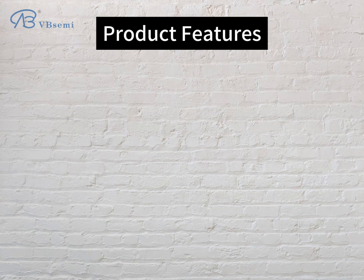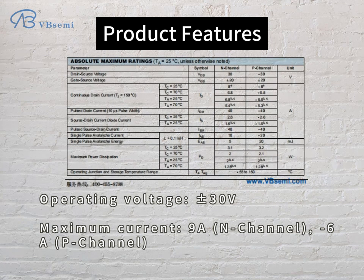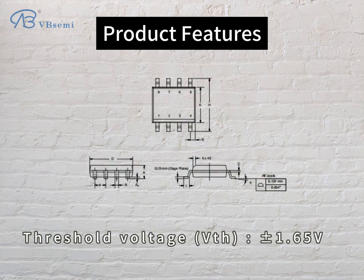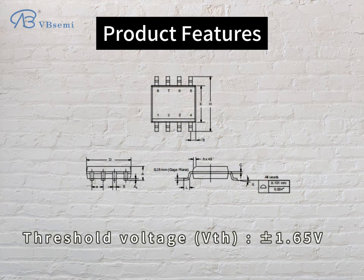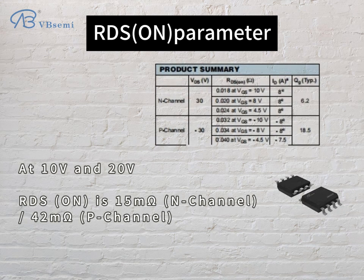Product features: operating voltage 30V, maximum current 9A N-channel, 6A P-channel. Threshold voltage VTH: 1.65V. RDS on parameter: at 10V and 20V, RDS on is 15mΩ N-channel, 42mΩ P-channel.